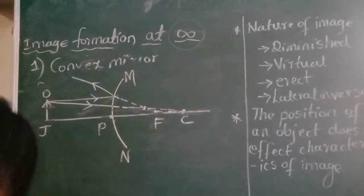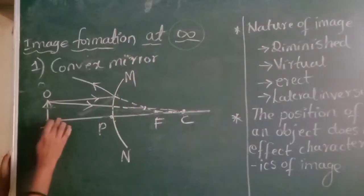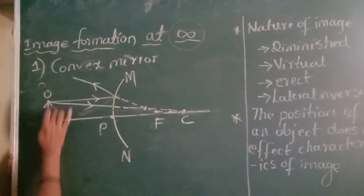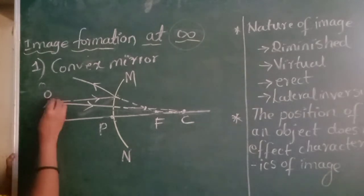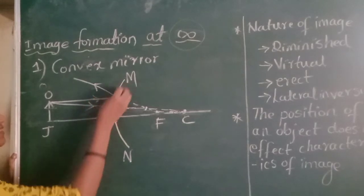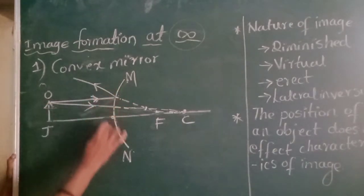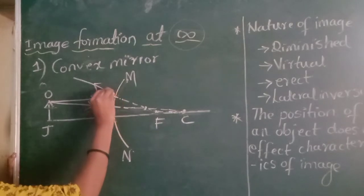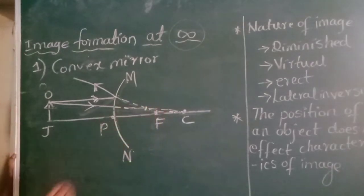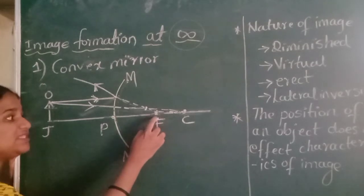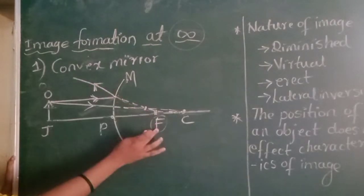Now let us consider image formation by the convex mirror. Here, I considered an object OJ — O is the top of the object, that is the head, and J is the bottom. A parallel beam of light is incident on the spherical surface of the convex mirror by the object OJ. The reflected ray diverges, and when you extend the reflected ray, it appears to come from a point — that point is the principal focus. It appears to come from the principal focus.